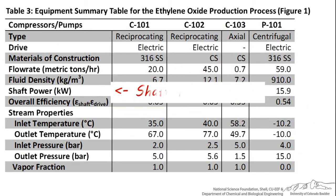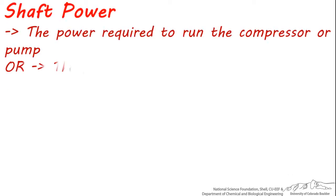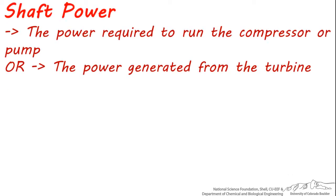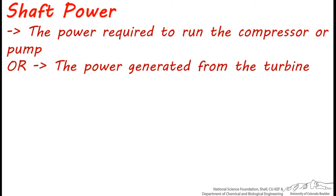Next is the shaft power, and since this can be a confusing concept, let's take a moment to look at what this means. Shaft power is the power required to run the compressor or pump, or it's the power generated from the turbine.